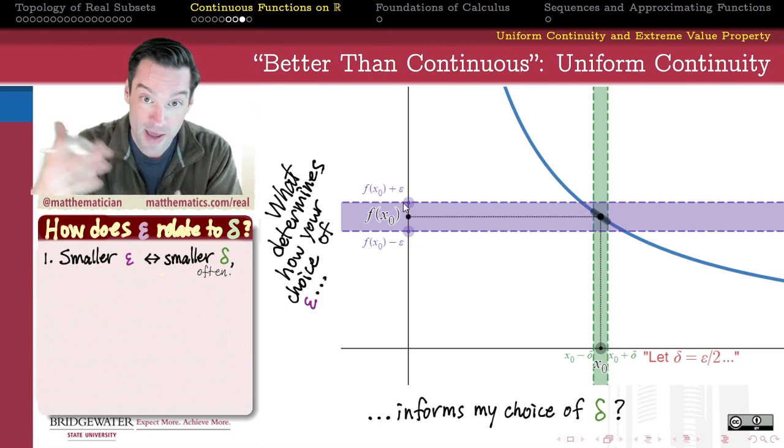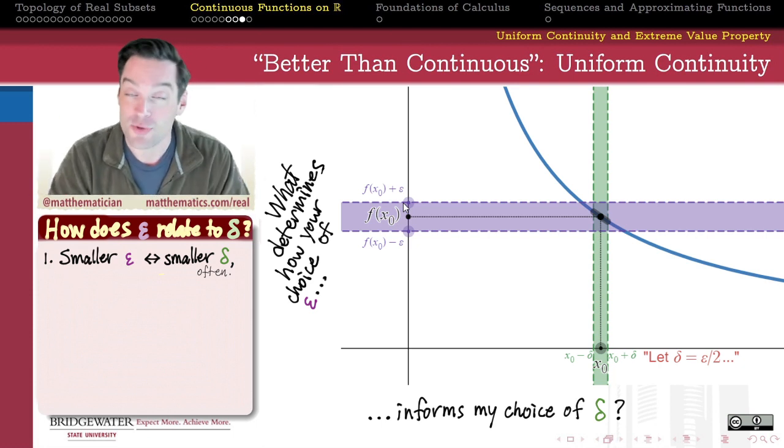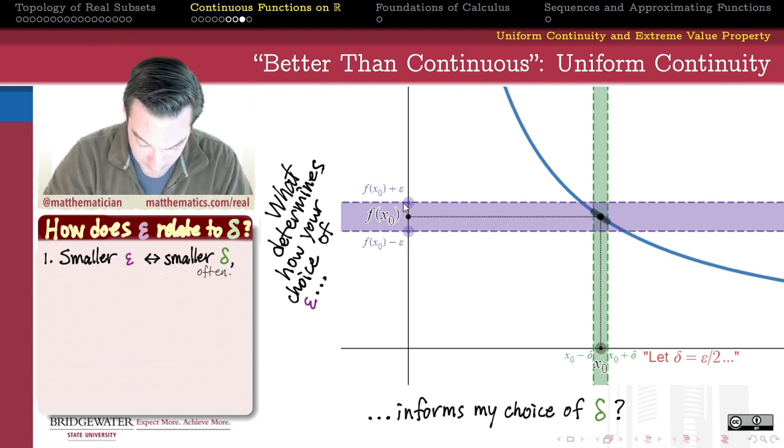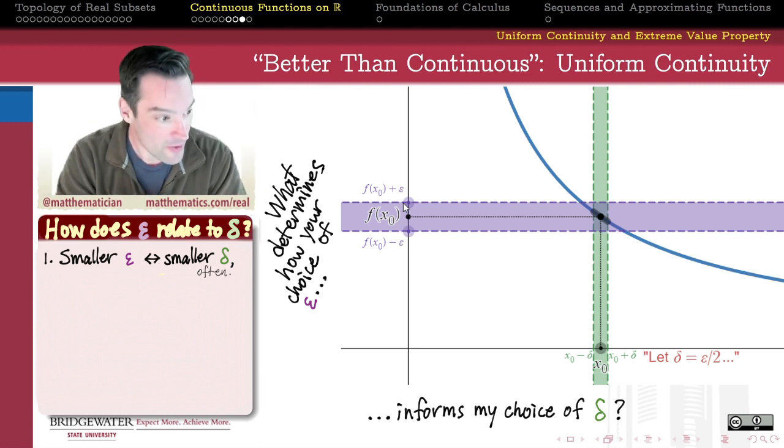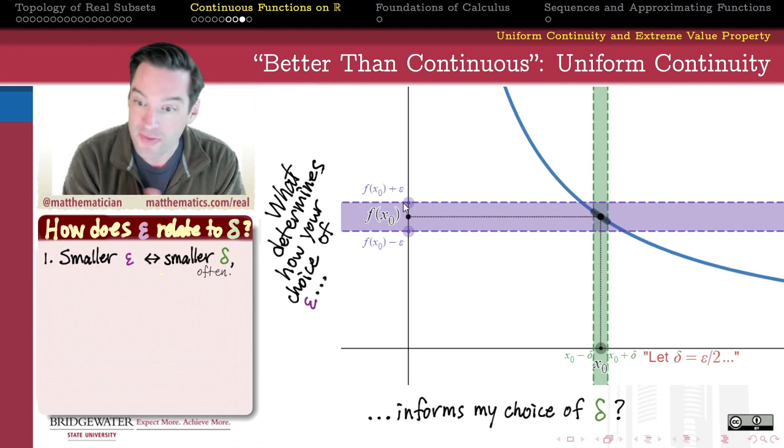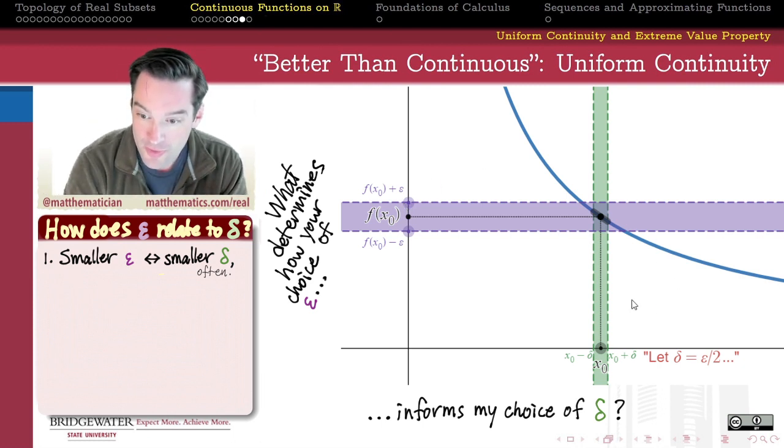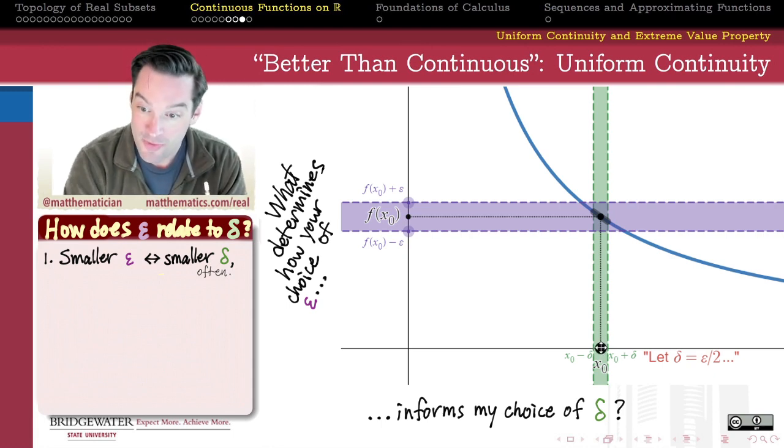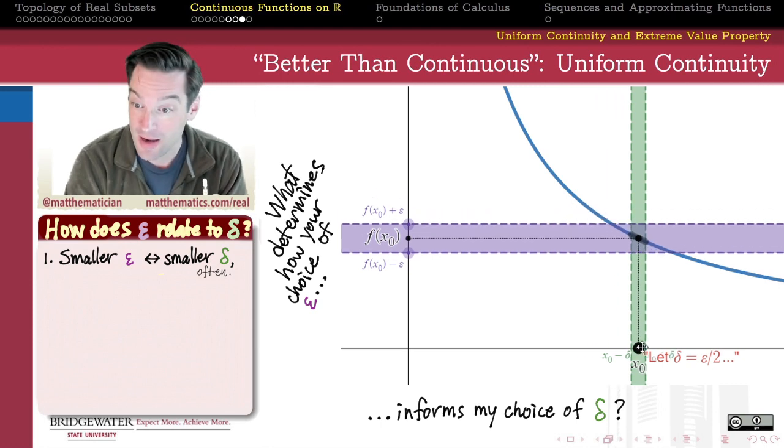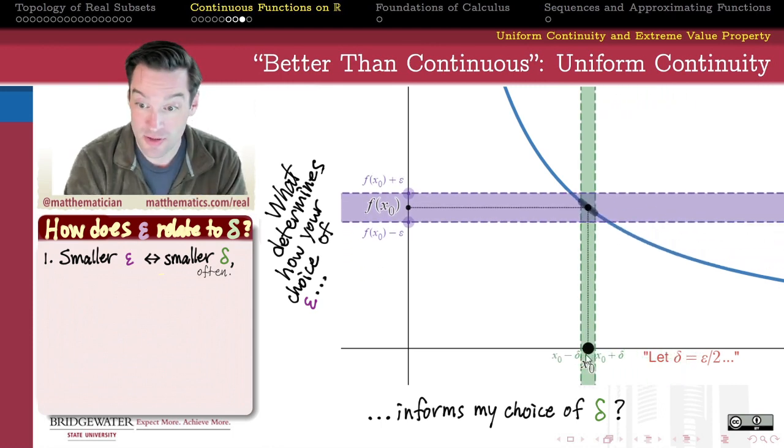So typically, for a continuous function, a smaller value of epsilon is going to lead to a smaller choice for delta. It's not always the case, but very often. Another thing that we might notice is if we think about how the choice of epsilon and the choice of delta are related to one another, there may be a difference depending on where in the graph of this function that we are at.